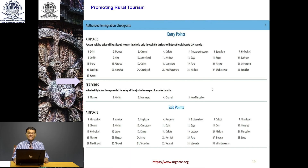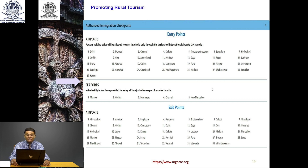Authorized immigration check posts — entry airports: Delhi, Mumbai, Chennai, Kolkata, Thiruvananthapuram, Bangalore, Hyderabad, Kochi, Goa, Ahmedabad, Amritsar, Gaya, Jaipur, Lucknow, Trichy, Varanasi, Calicut, Mangalore, Pune, Nagpur, Coimbatore, Bagdogra, Guwahati, Chandigarh, Visakhapatnam, Madurai, Bhubaneswar, Port Blair and Kannur.